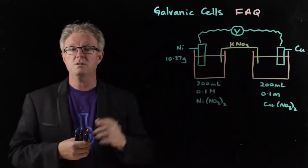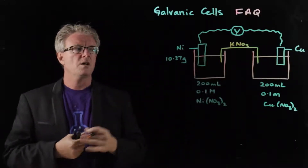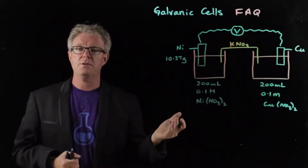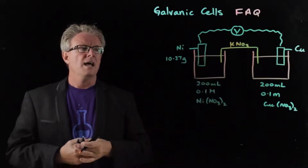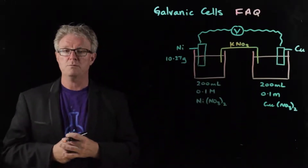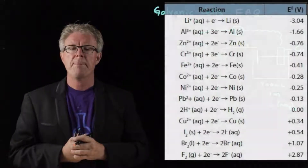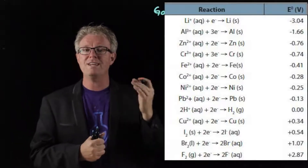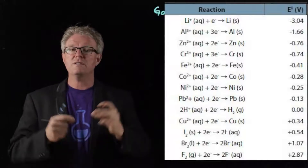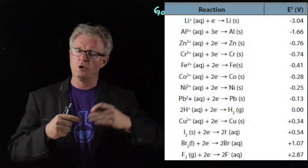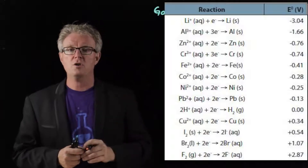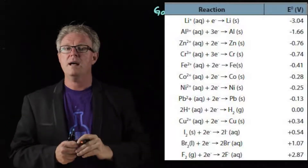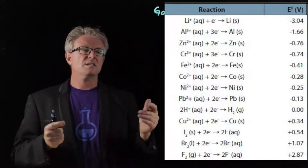The first question is to identify the anode and the cathode and the direction of electron flow. You need to refer to your standard table of reduction potentials. The ones closest to the top — the more active metals — have a negative reduction potential. Those are very active metals that want to lose electrons, meaning they're very strong oxidants. We look at where nickel is and where copper is, and the one that's higher up is the one that's going to be oxidized. In this case, it's nickel.